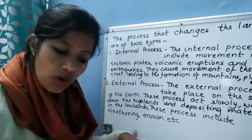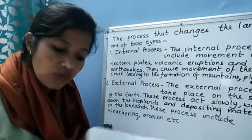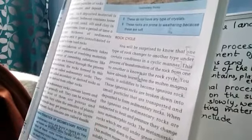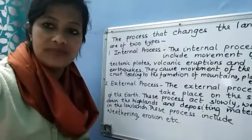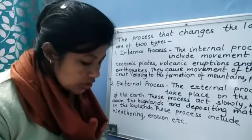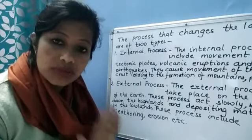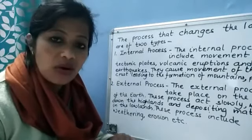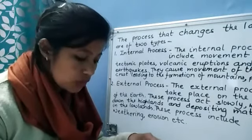For the question 'Explain the process of transformation of rock from one to another,' write from page 45: one type of rock changes to another type under certain conditions in a cyclic manner; this process is known as the rock cycle. Which rocks contain fossils? Sedimentary rocks. Which rocks are formed due to volcanic activities? Igneous or primary rocks.